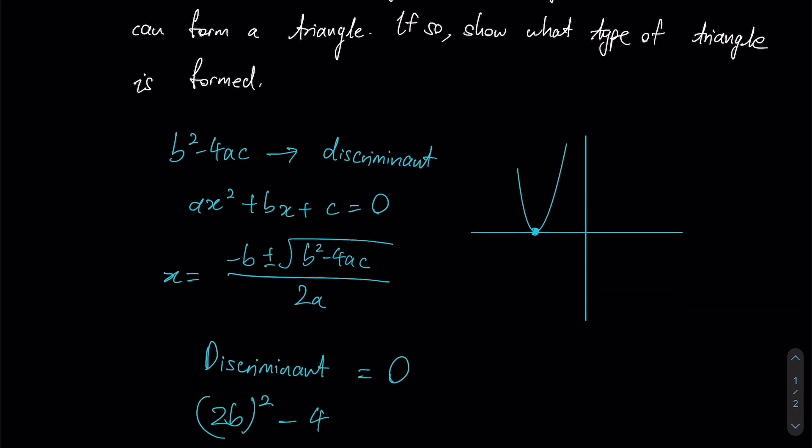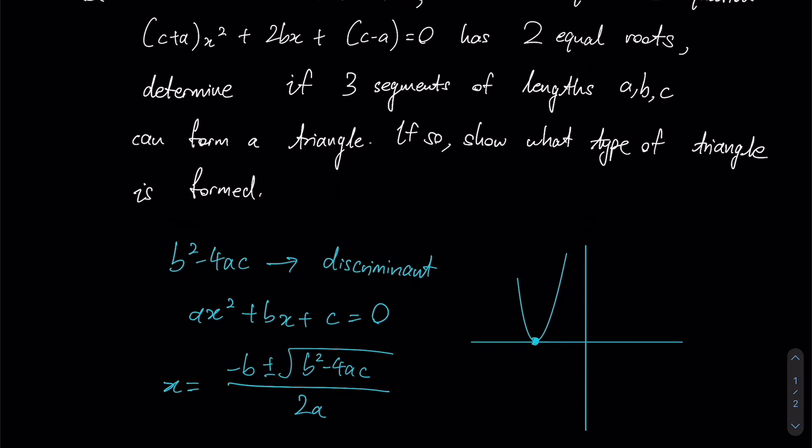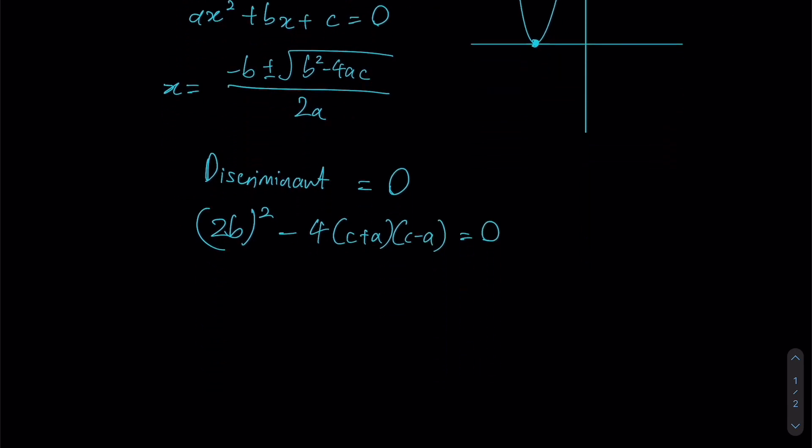...times (c + a), and my c is actually (c - a). Therefore I know that this has to be zero to achieve two equal roots, so I just need to expand this moving forward.